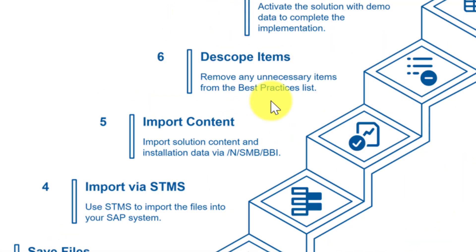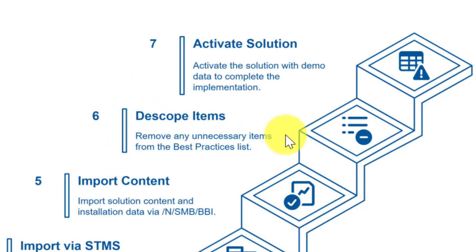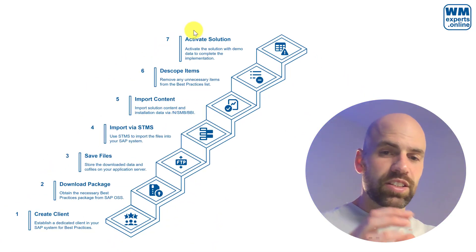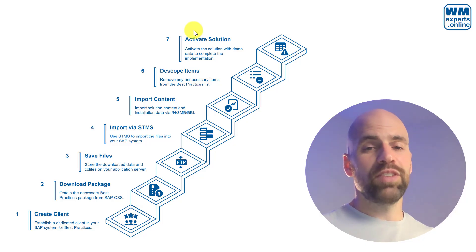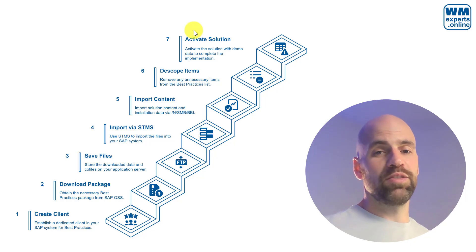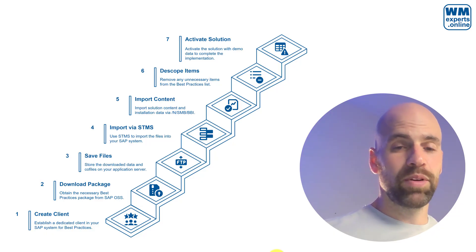Then you run transaction SMBBBI, and with this transaction you can import the solution content and the installation data. You can also de-scope items from the best practice list at this point — if you don't want to install everything, you can de-scope here. The last step is the activation of the solution and the demo data, which completes the implementation. This is a very high-level overview and it sounds simple, but I promise you it is not. I will give you a link in the video description for a very comprehensive blog describing every single step — a big shout out to Hanuma and Mahesh for that write-up.